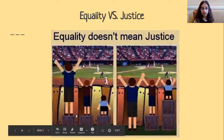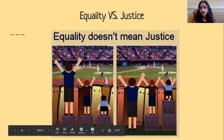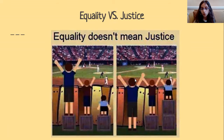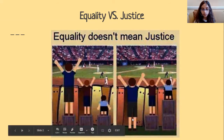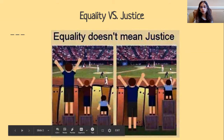In this case, we don't want equality. We want justice instead. In the picture on the right, justice would be so that they could all see over the fence, which is what their objective is to do. This person doesn't have any boxes, this person has just one box, and then this person has two boxes. So they can all look over the fence.